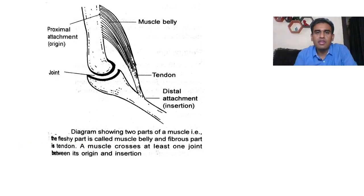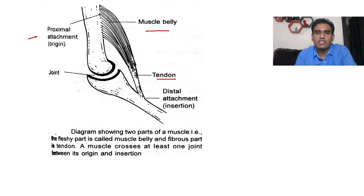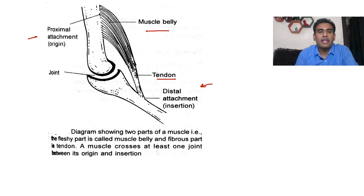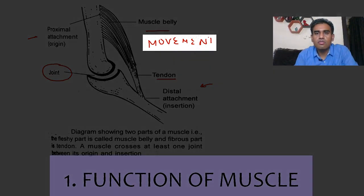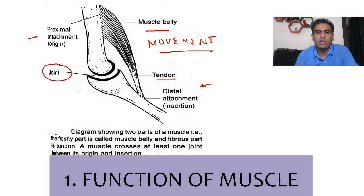In this particular figure, we can see a muscle with its belly, and with the help of a tendon it is attached at two places — one is a proximal attachment and one is a distal attachment, as discussed in the previous video. The important point to note is that this muscle is crossing a joint. Why? Because the muscle's function is movement, so a muscle has to cross a joint. If it is not crossing a joint, it is not performing its function. The joint here is normally a movable joint.